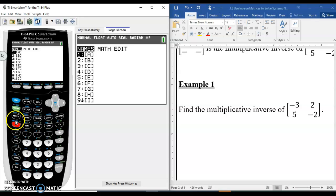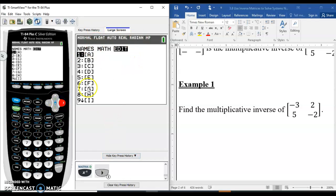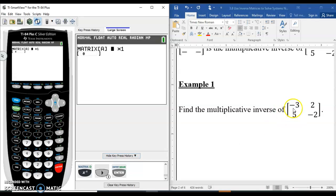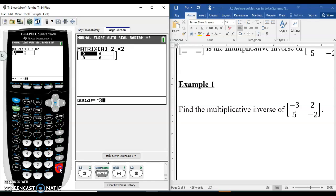So I'm just going to go to my matrix editor, and then I'm going to go edit, and I'm just going to call this matrix A. So matrix A that we've been given is a 2 by 2, so we'll set it to a 2 by 2, and then you'll enter the matrix elements accordingly.